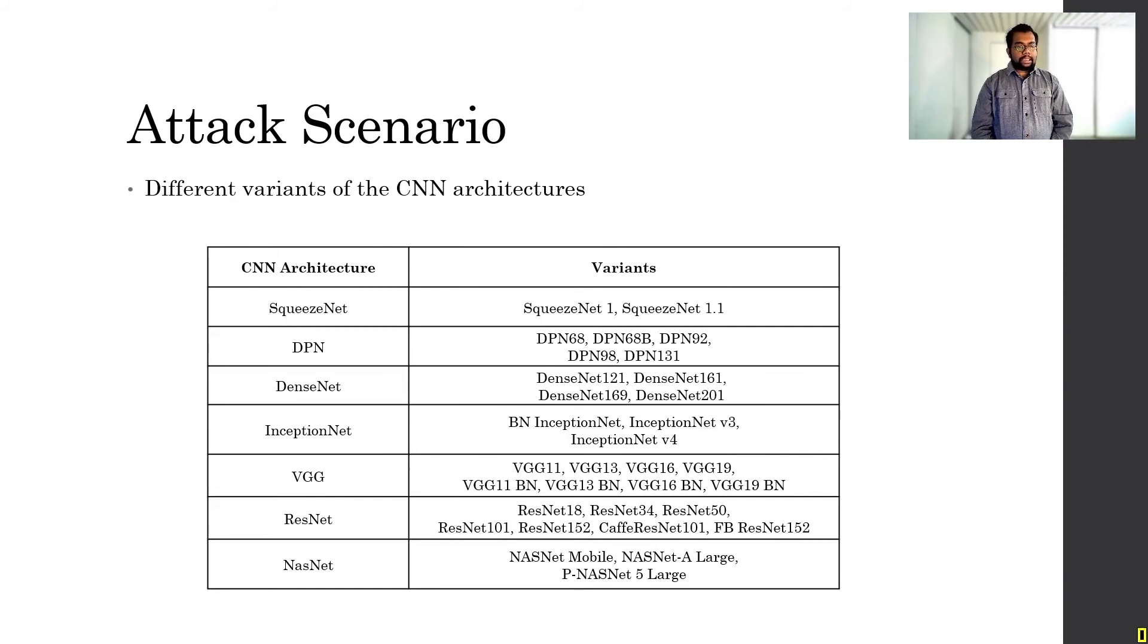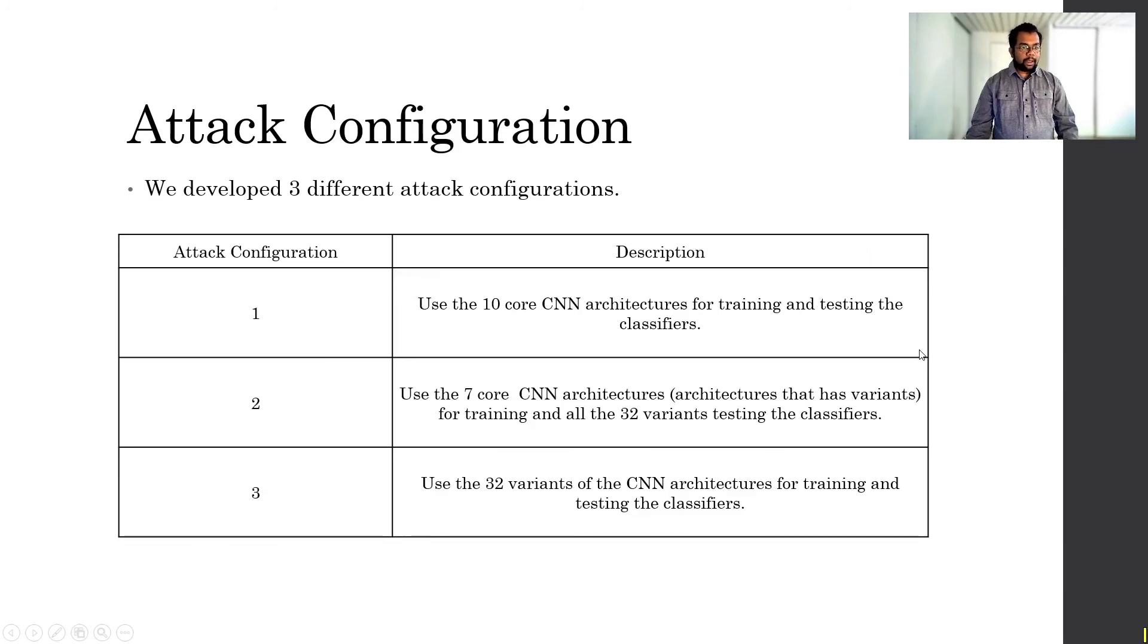Before describing the attack scenario further, I just wanted to show the different variants of the CNN architectures that are available with the PyTorch library. There are seven architectures here that have different variants. SqueezeNet has SqueezeNet 1.0 and 1.1, DPN has a bunch of different variations, VGG has a lot of variations, and so on. We will also be using the variants in our attack scenario, which I will be describing shortly.